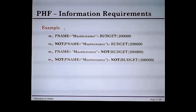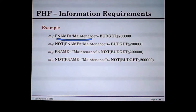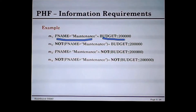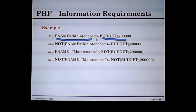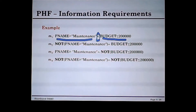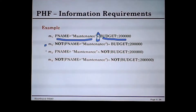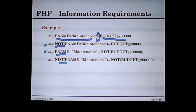In the project relation, project name equal 'maintenance' is a simple predicate, and budget less than or equal to 100,000 is another simple predicate. You connect two simple predicates together using the conjunction operator. You may also have minterm predicates m2, m3, or m4.